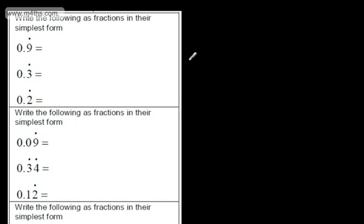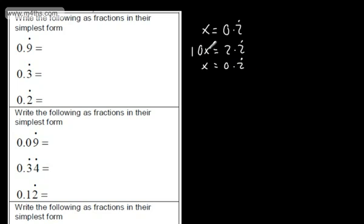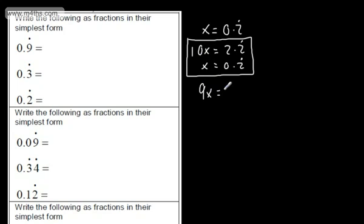So let's do 0.2 recurring. Hopefully now you can guess what the result is going to be. So we will let x be equal to 0.2 recurring. Therefore 10x will be equal to 2.2 recurring. We'll rewrite this underneath: x is going to be equal to 0.2 recurring. 10x minus x is 9x. 2.2 recurring minus 0.2 recurring is just going to give us 2. So x is going to be — dividing both sides by 9 — 2 over 9.